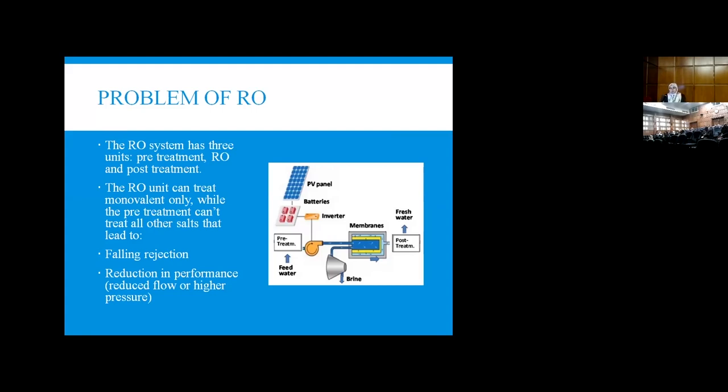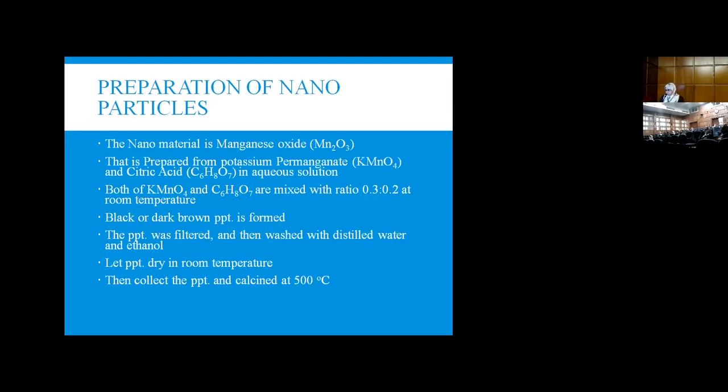The pre-treatment unit is responsible for treating all waste except for monovalent waste. The RO unit is responsible for treating monovalent waste. Problems of RO include fouling, failing rejection and reduction in performance. That is because RO can treat only monovalent salts.